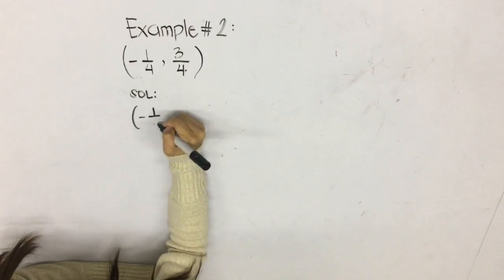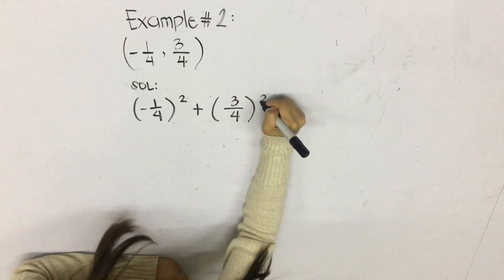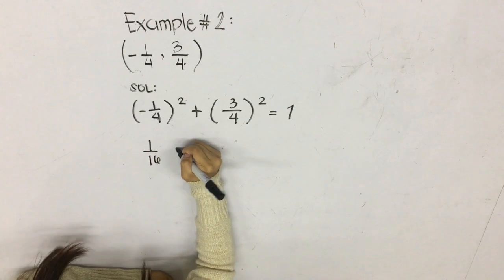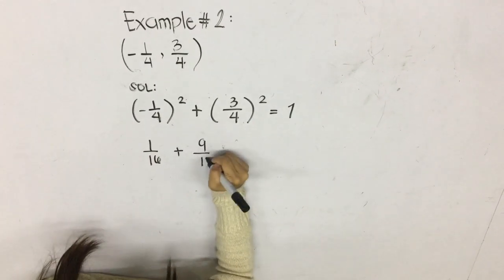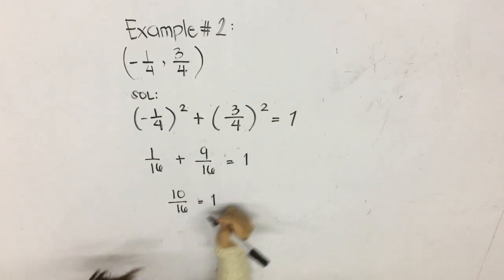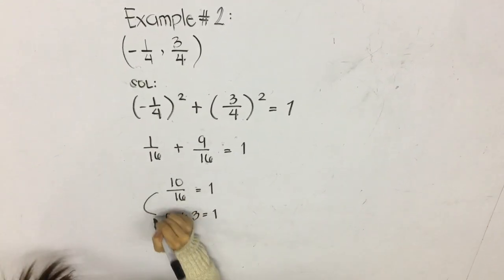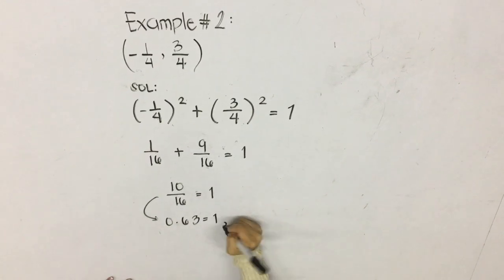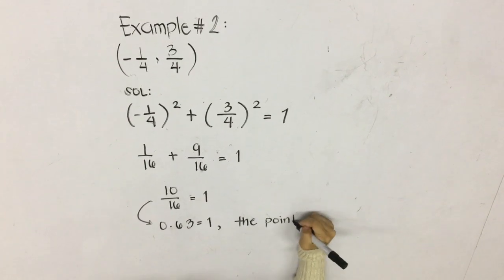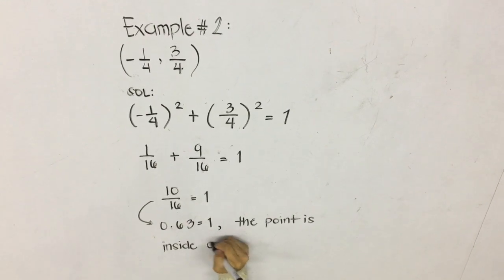For example number 2: negative 1 fourth squared plus 3 over 4 squared. Negative 1 fourth squared gives 1 over 16, and 3 fourths squared gives 9 over 16. Since they have the same denominator, you add the numerators to get 10 over 16. In decimal, 10 over 16 is 0.63, which is less than 1, so the point lies inside the unit circle.